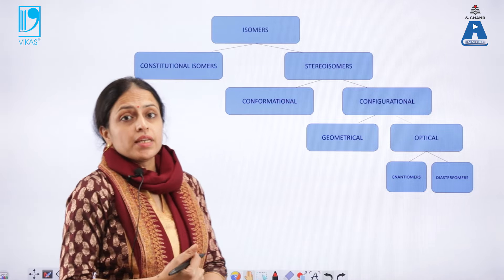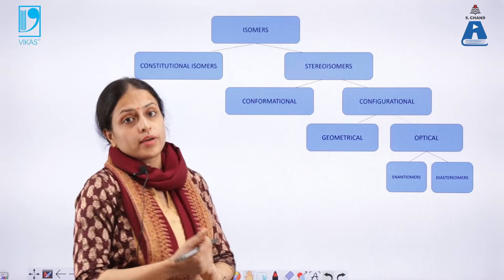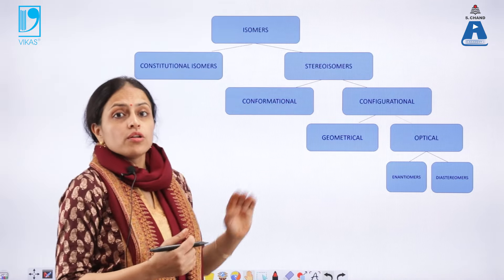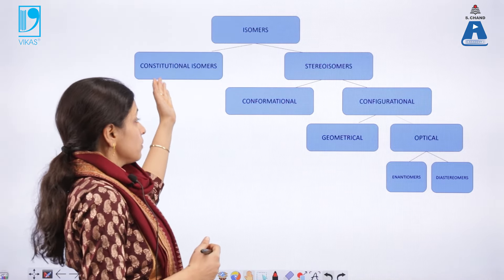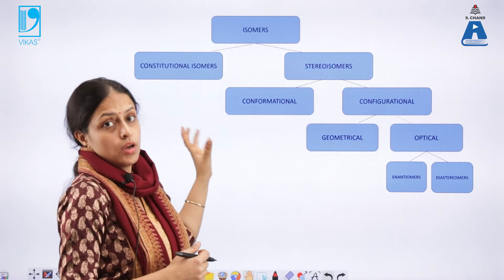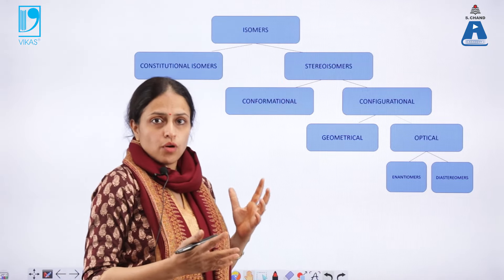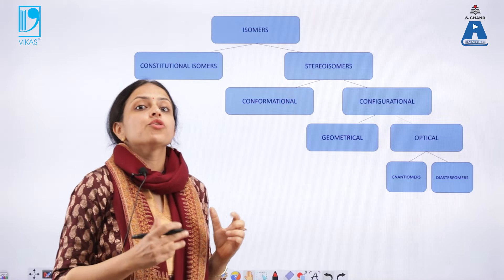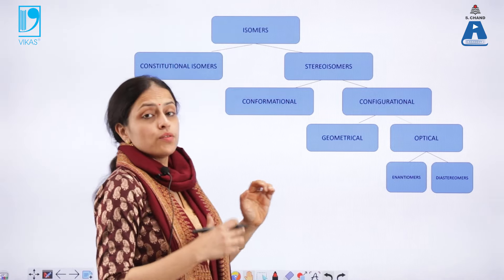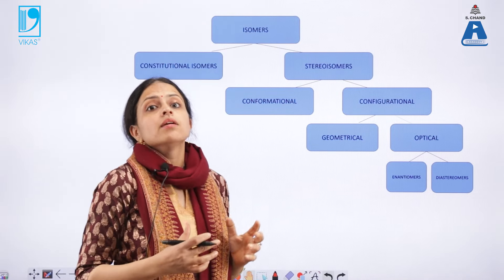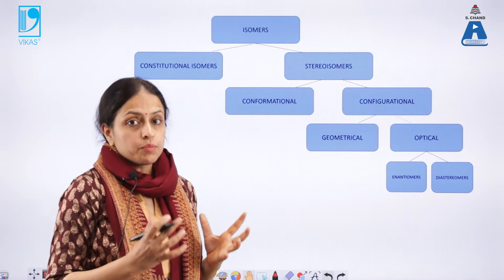Isomers can be basically classified into constitutional isomers and stereoisomers. Constitutional isomers are those in which there is a difference in structure — they may be similar in molecular formula but structurally they appear to be different. Whereas stereoisomers differ in the way the atoms are oriented in space.